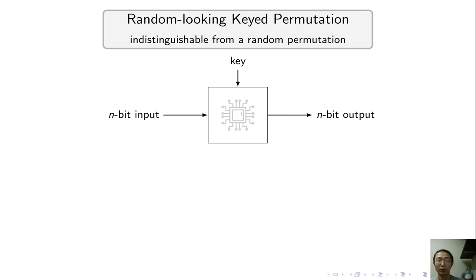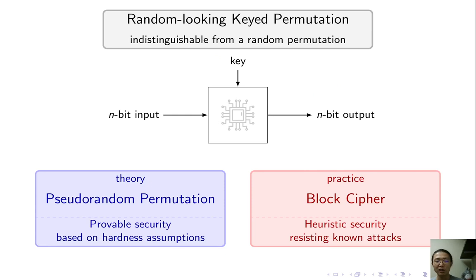A central problem in crypto is to construct random-looking keyed permutations. Tons of works are targeting this problem. Among these works, there is a well-known, though not-so-well-defined gap between theory and practice. The theory work calls this object a pseudorandom permutation, and they focus on security based on well-studied assumptions. The practice work calls this object a block cipher. They are okay with heuristic security; the first priority is being super-efficient.